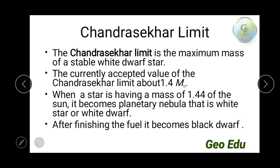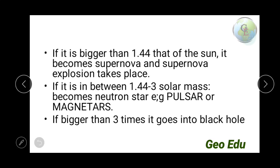If the size is bigger than 1.44 solar mass, it goes to a supernova explosion. We can further classify these bigger stars into two categories. If the mass is between 1.44 and 3 solar mass, it becomes a neutron star. In a neutron star, protons and electrons combine to form neutrons. Examples are pulsars and magnetars.